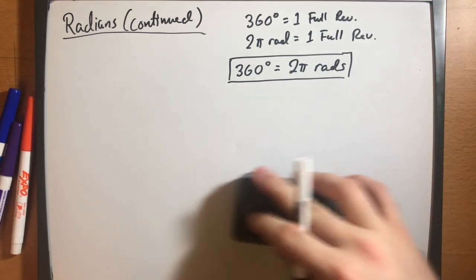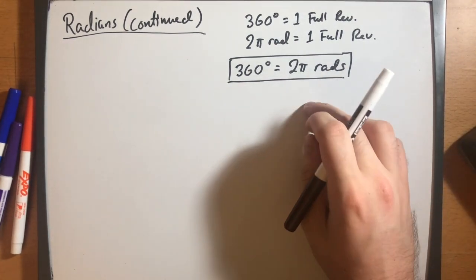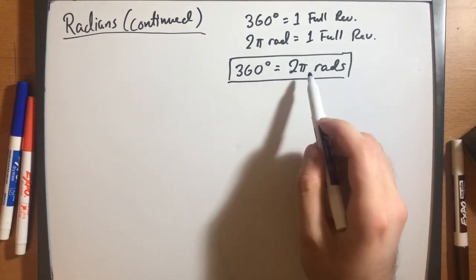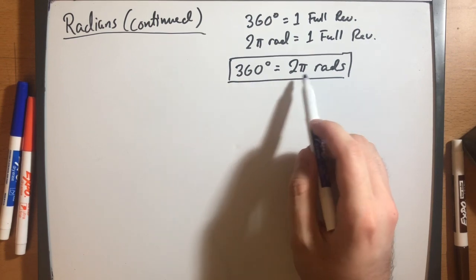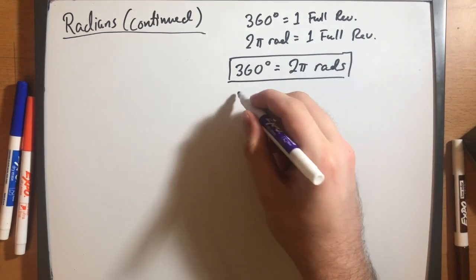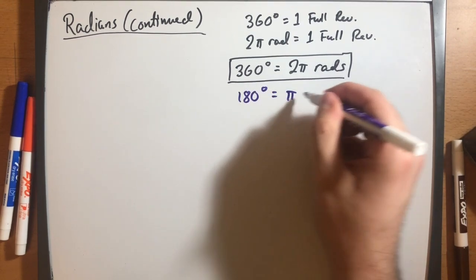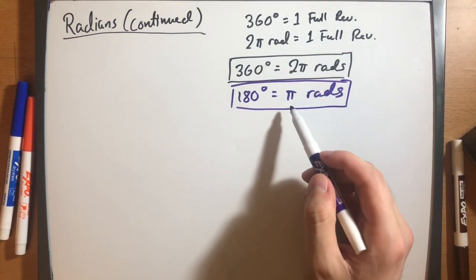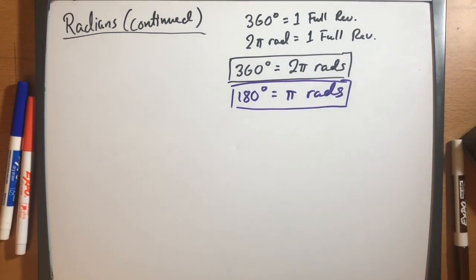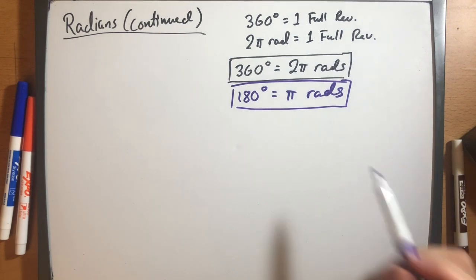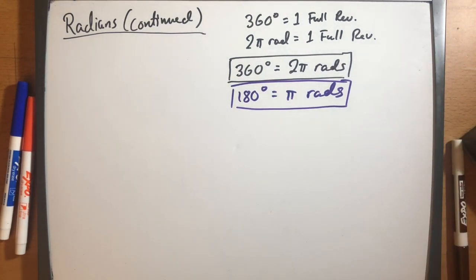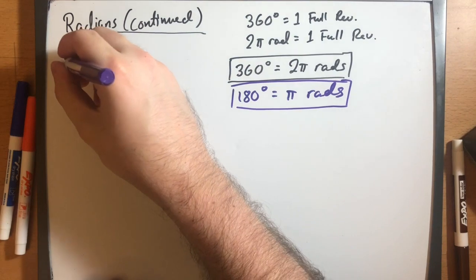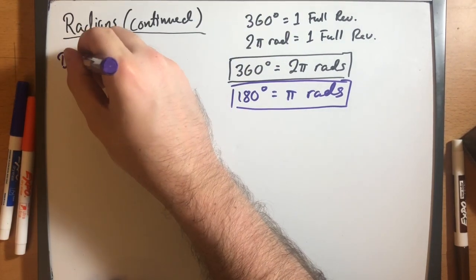We can convert between degrees and radians using a simpler relationship. If we divide both sides of 360 degrees equals 2 pi radians by two, we get that 180 degrees equals pi radians. This is actually a little bit better to use when converting between the two units. The fast method to convert has two formulas — they're essentially the same thing, just flipped.